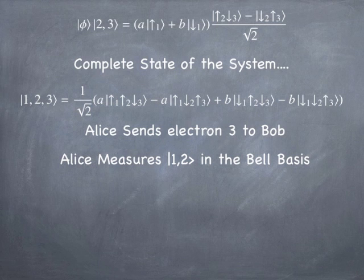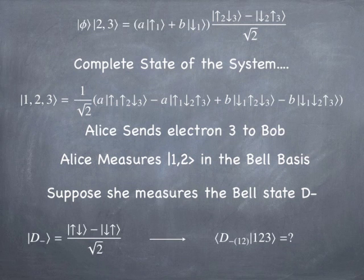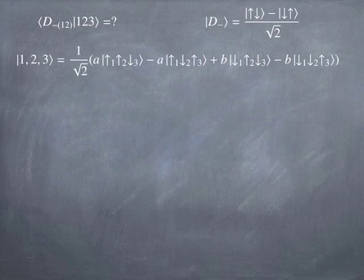The quantum state of electrons one, two, and three is this product state phi times D-minus for two and three, and we can multiply all that out to figure out the complete state of the entire three-electron system. Alice sends electron three to Bob, and then Alice measures the one-two system in the Bell basis. In other words, she has some machinery where she can send electrons one and two through and out will come the answer: D-plus, D-minus, S-plus, or S-minus. Those four states span the entire possible spectrum of states that one and two can have, so the combination has to be in one of those four states.